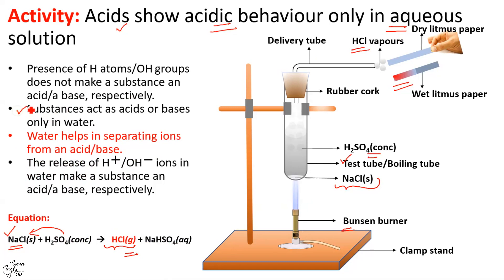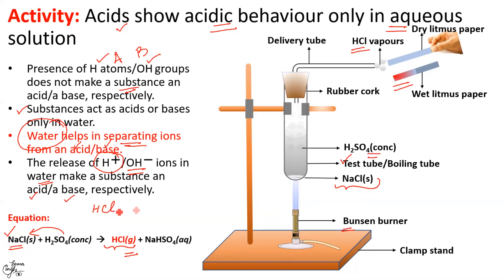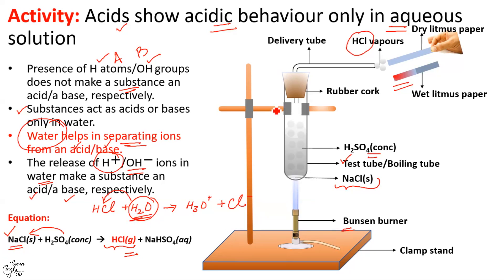From this activity we can conclude that acids show acidic behavior only in the presence of water, i.e., in aqueous solution. The same holds true for bases. Simply the presence of an H atom or an OH group will not make a substance an acid or a base — it is the release of H⁺ ions and OH⁻ ions, which happens in the presence of water, that makes them an acid or a base. The role of water is to help in separating ions: for HCl dissolved in water, the water helps separate the hydronium ion H₃O⁺ and the anion Cl⁻.